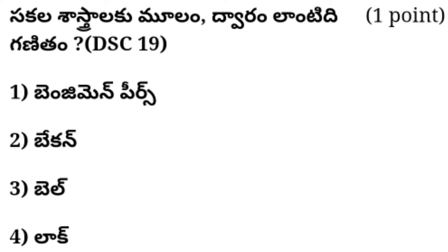Option 1: Benjamin Pierce. Option 2: Bacon. Option 3: Bell. Option 4: Lock. The answer is, comment box. Option 2: Bacon. Suckle is not a bacon. Suckle is a one. Bacon. So I will see this — very easy.